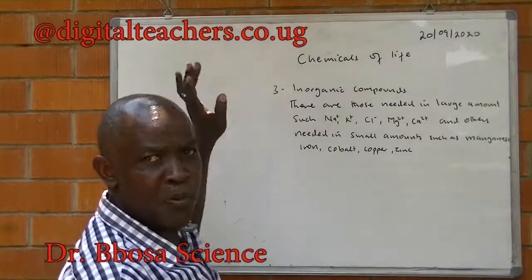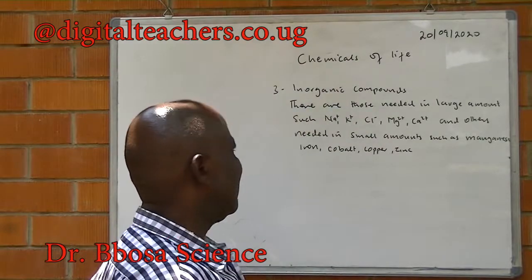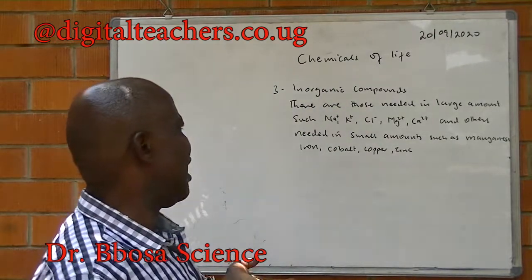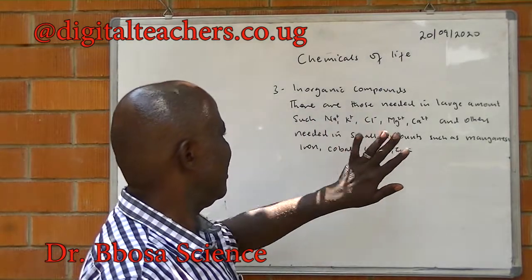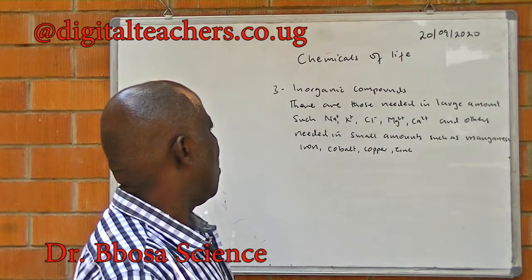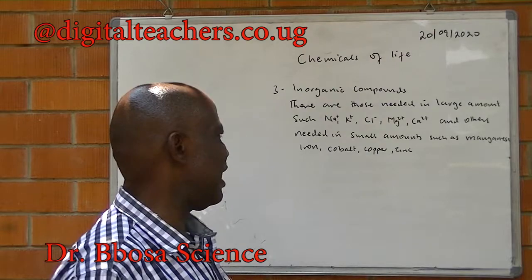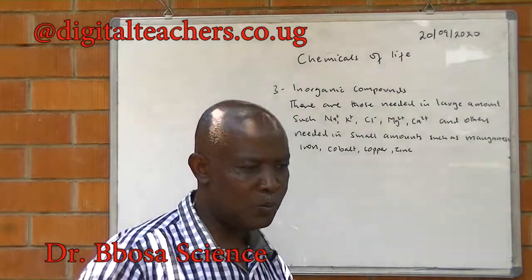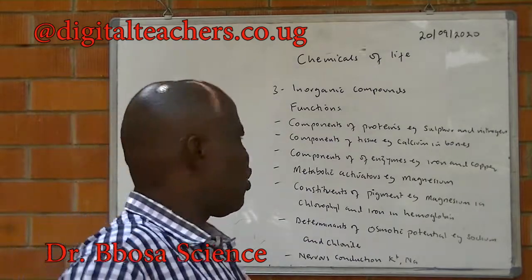Another component of chemicals of life is inorganic compounds. There are those needed in large amounts, such as sodium, potassium, chloride, manganese, and calcium, and others needed in small amounts, such as iron, cobalt, copper, zinc, and so on.